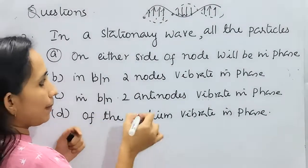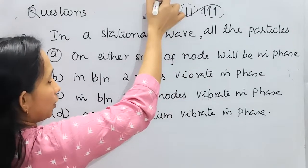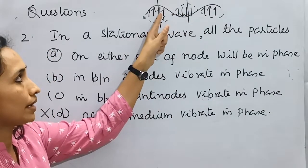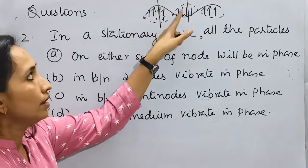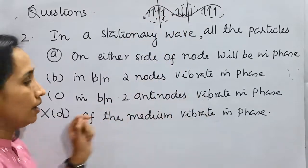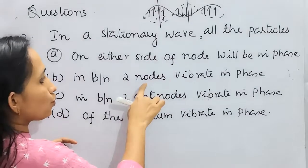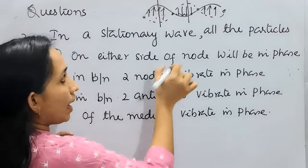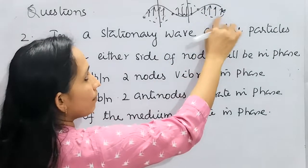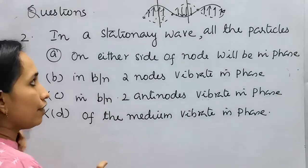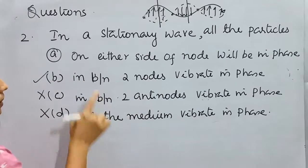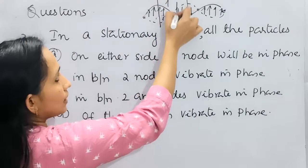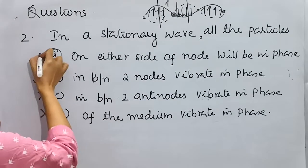In between two anti-nodes: consider this particle moving upward and another moving downward — they are not in phase, so that is also not true. In between two adjacent nodes, particles vibrate in phase — that is the most appropriate correct answer. On either side of a node: one is moving upward and the other downward, so they are not in phase either.